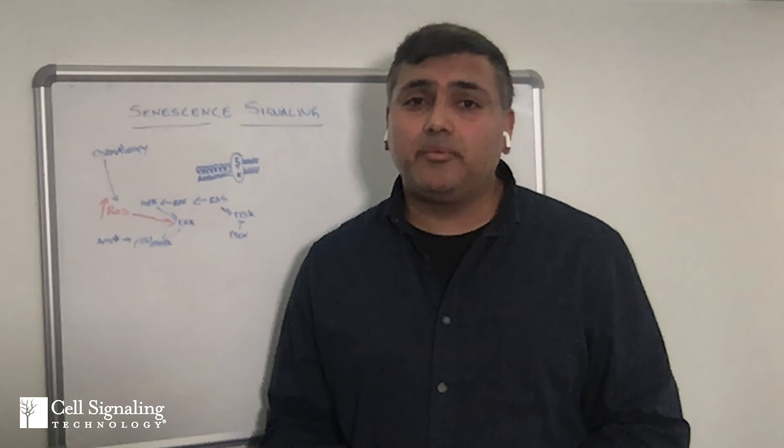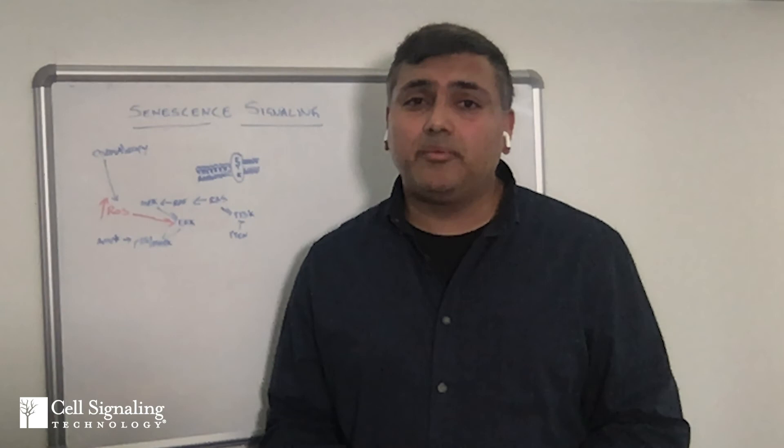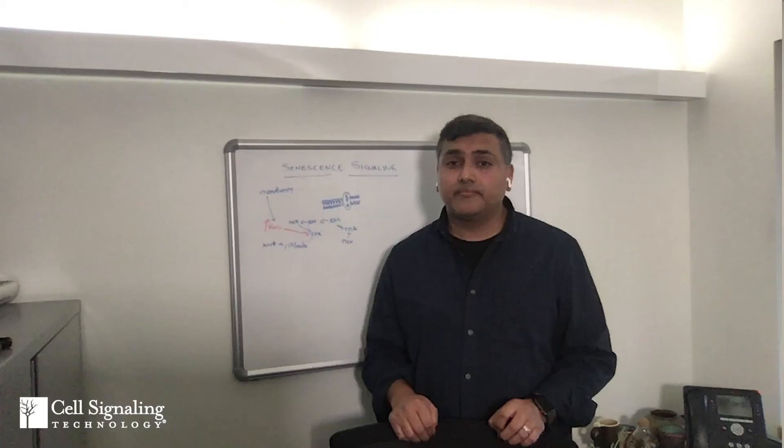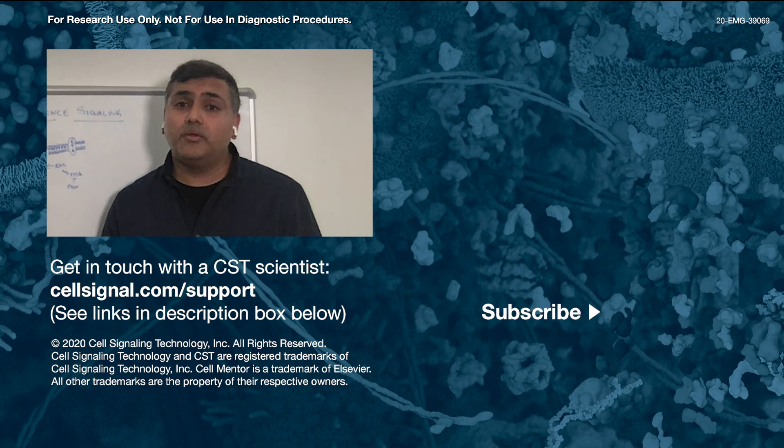In addition to selecting the right reagents, solid experimental design and comparison with markers for other forms of cell cycle exit such as apoptosis can go a long way to confirm that what you're measuring reflects the biology in your samples. If you have questions about any of our kits, antibodies, or protocols, get in touch with a CST scientist at cellsignal.com/support. Don't forget to subscribe to our channel and click the bell for notifications. Thanks for watching and good luck with your experiments.